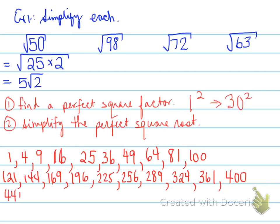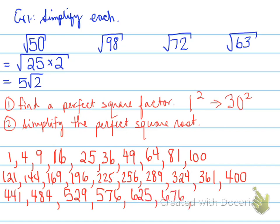From 21 to 30 squared: 21 squared is 441, 22 squared is 484, 23 squared is 529, 24 squared is 576, 25 squared is 625, 26 squared is 676, 27 squared is 729, 28 squared is 784, 29 squared is 841, and 30 squared is 900. These are all the perfect squares from 1 squared up to 30 squared.